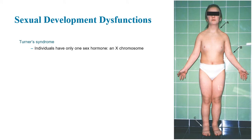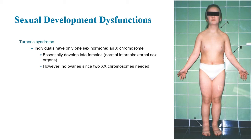Turner's syndrome is where an individual only has one X chromosome. They will typically be female but with many other issues, such as dwarfism. External development is into a female form, though they tend to not have fully developed breasts and have no ovaries — so there is no estrogen being produced, as you need two X chromosomes for ovaries. Turner's individuals tend to have a shorter stature and short webbed neck. As far as I'm aware, people with Turner's are always sterile since they don't develop ovaries.